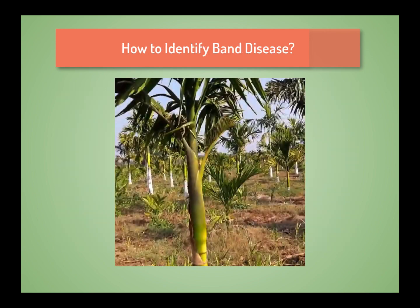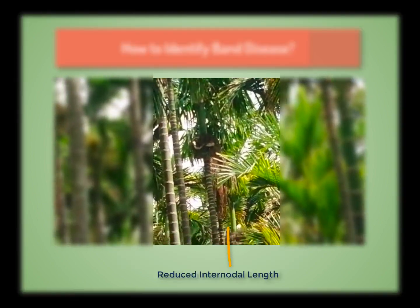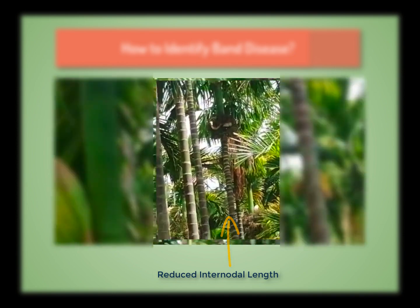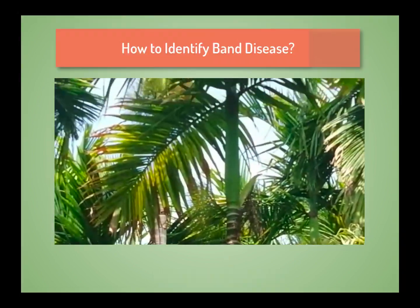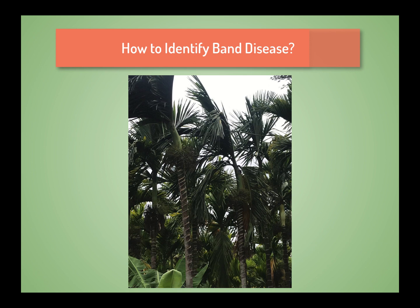We can identify its first symptoms when we see reduction in leaf size, which turns brittle and crinkled with wavy margins. With time, the tree nodes do not expand and the internodal length gets reduced. The stem starts tapering and leaves fail to open naturally. Next, the tree starts bending towards one side near the crown and produces small unproductive malformed bunches.